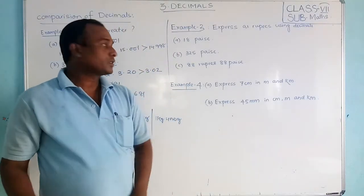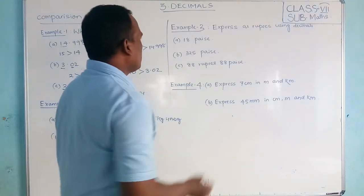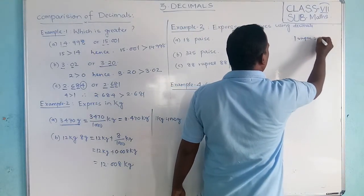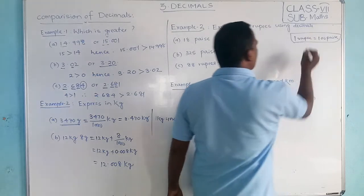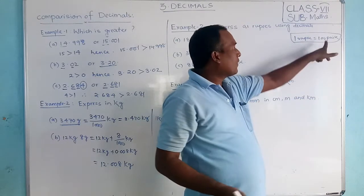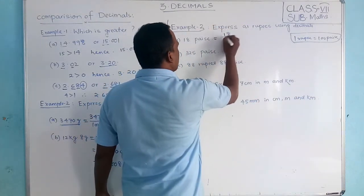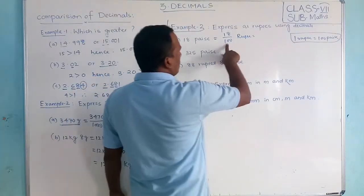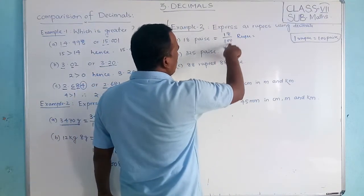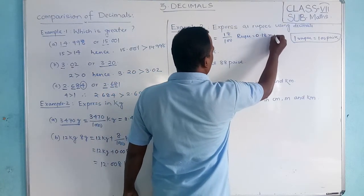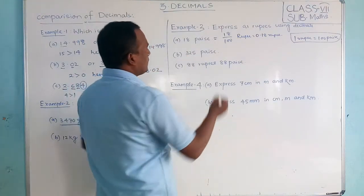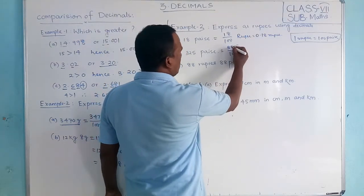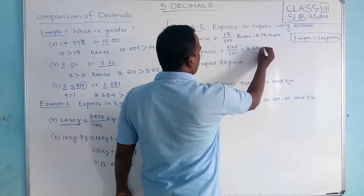Similarly: 80 paise — express in rupees. 1 rupee equals 100 paise. So when converting paise to rupees, divide by 100. So 18 paise divided by 100 rupees — since there are 2 digits after dividing by 100, place the decimal: 0.18 rupees. Similarly, 325 paise divided by 100 — 2 digits after decimal, so 3.25 rupees.